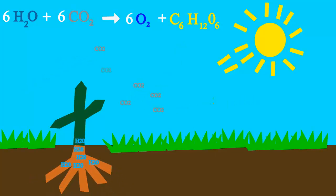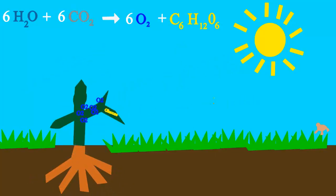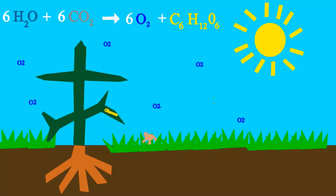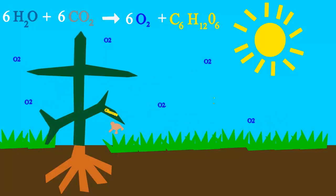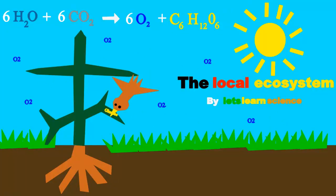Plants take water, sun and CO2 to make glucose, the sugar that they use for food. They also put oxygen into the air so we can breathe, because oxygen is everywhere.